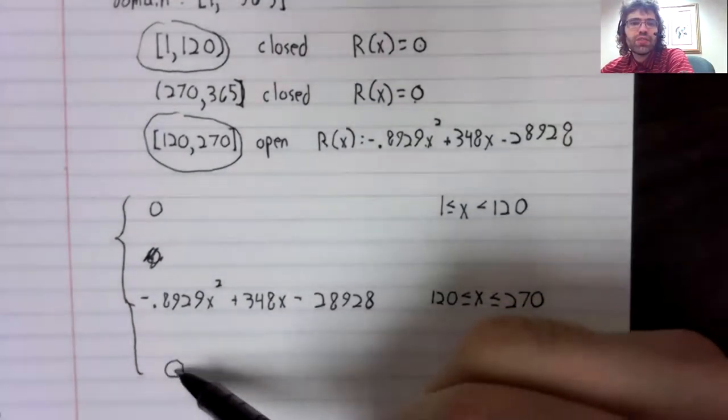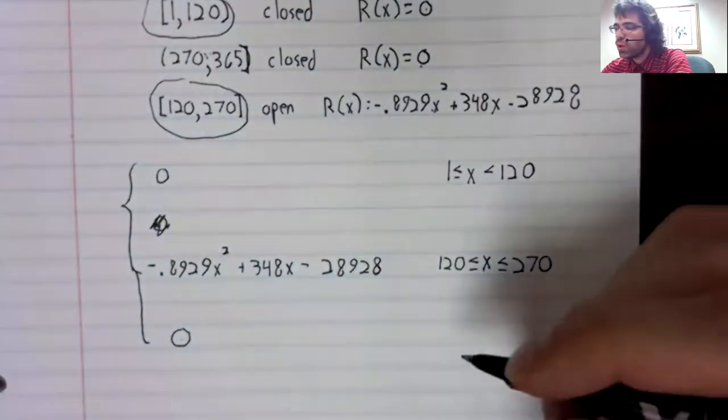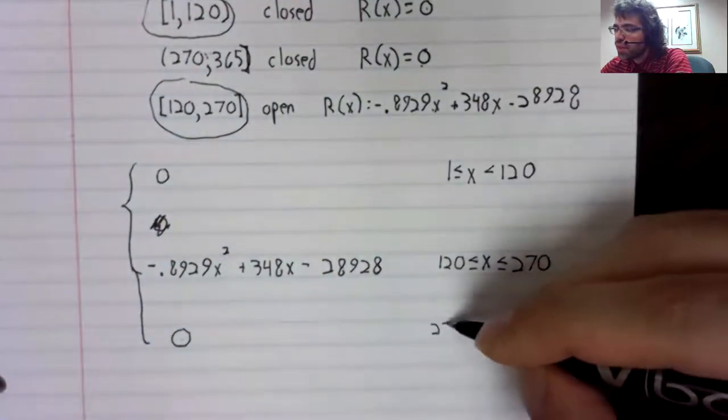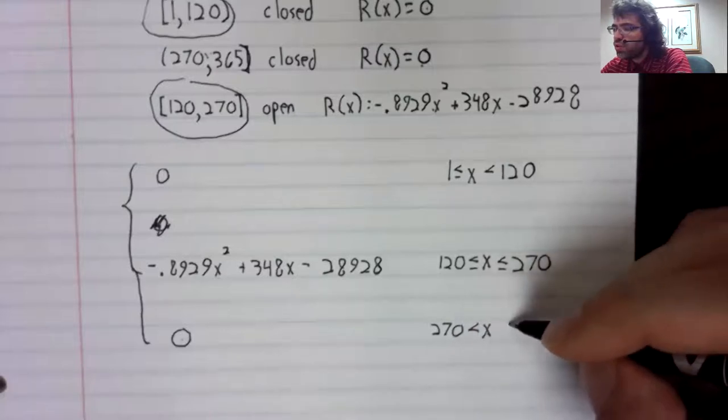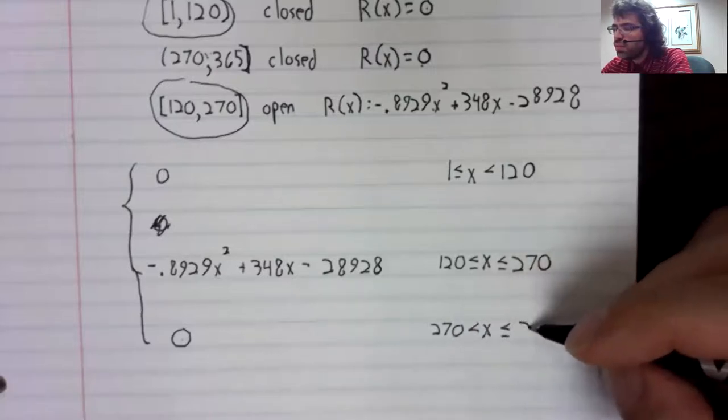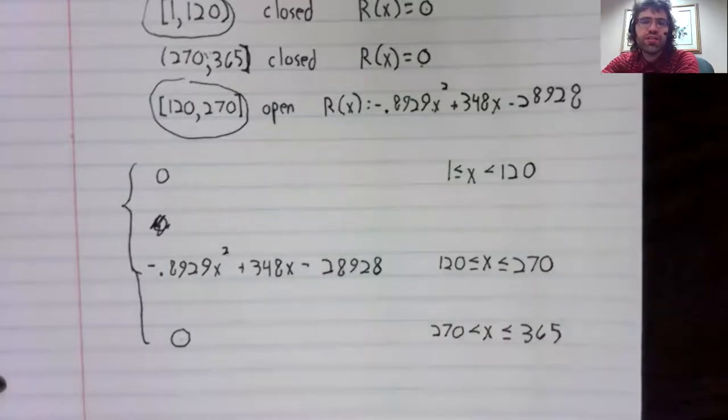And this last piece comes from this interval, x is between 270 and 365.